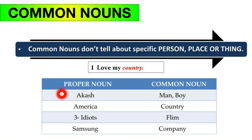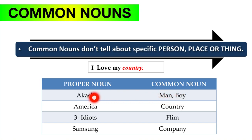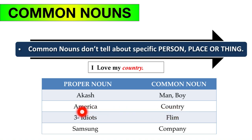Let me clear the confusion between proper nouns and common nouns. For example, 'Aqas' is a specific name, so it is a proper noun. But the common noun for Aqas would be 'boy' or 'girl' — a general category. Similarly, 'America' and 'India' are proper nouns, but 'country' is the common noun. The specific name is proper; the general category is common.